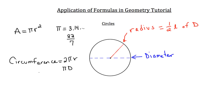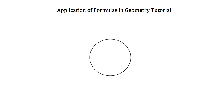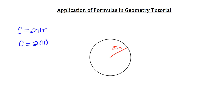Let's do some practice problems using circumference and area. Our practice circle has a radius of 5 inches. For circumference, we use C equals 2πr: that's 2 times π times 5. Since 2 times 5 is 10, the circumference is 10π.